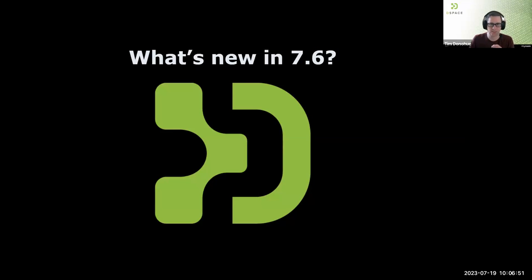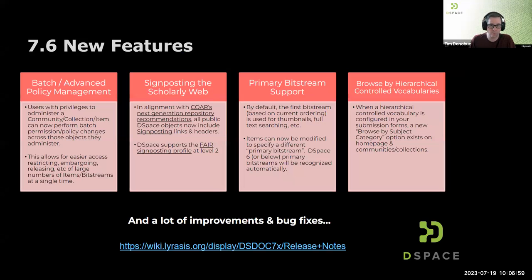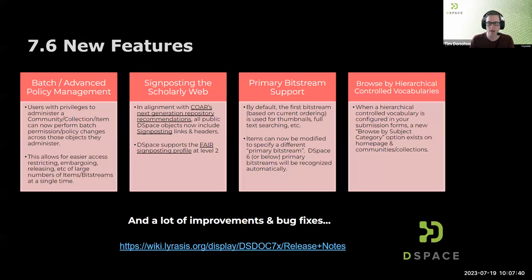What's new in 7.6, which came out a little less than a month ago in June? The four biggest features: the batch or bulk policy management tool allows you to manage privileges across many communities, collections, or items at once — quickly embargoing or removing embargoes and access restrictions across many items or bitstreams. This tool has been completely rebuilt and redesigned in DSpace 7. I'm going to show a quick demo shortly.